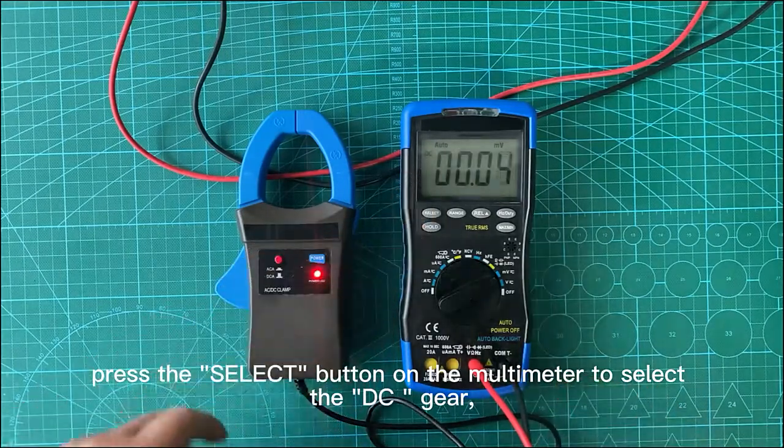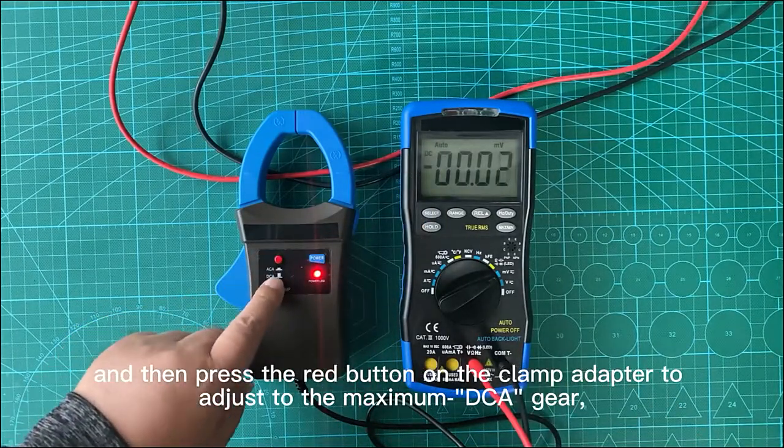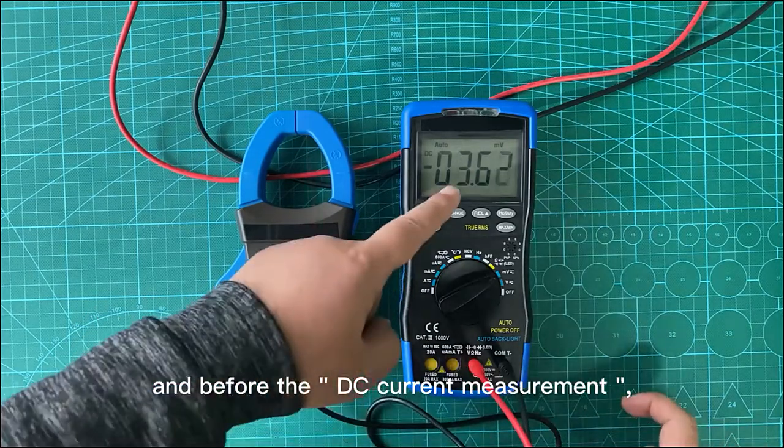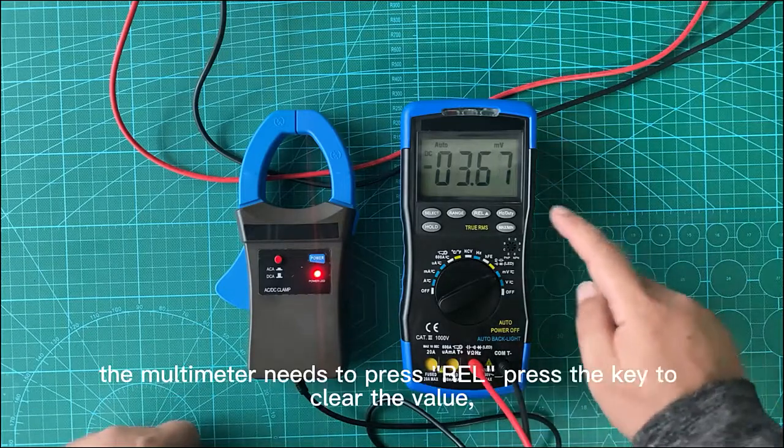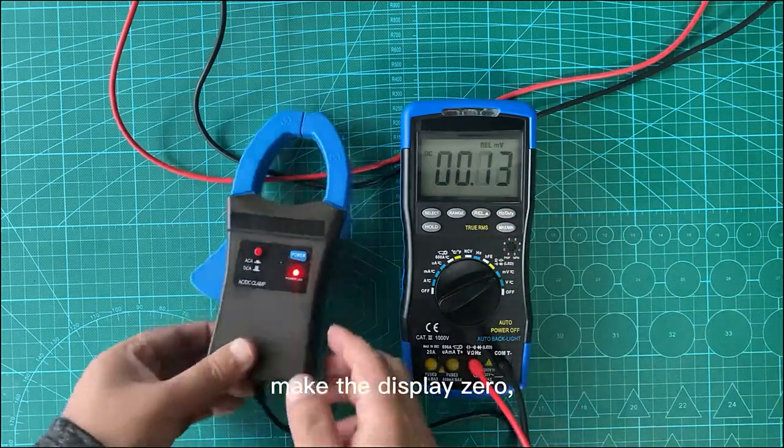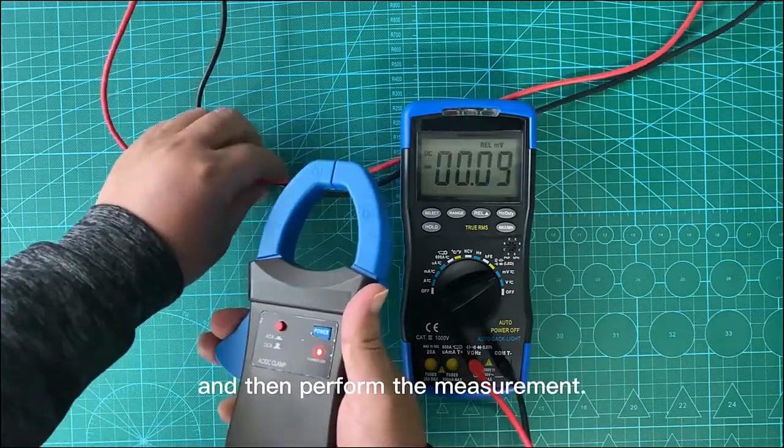Press the red button on the clamp adapter to adjust to the maximum DC amperes. Before DC current measurement, press the REL key to clear the value, make the display zero, and then perform the measurement.